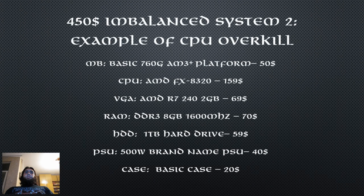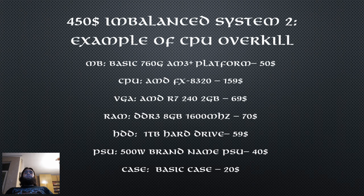This second example system is a bit more balanced but still not configured properly if your purpose is gaming. When dealing with a tight budget we have to find the perfect ratio between CPU and GPU power. In this machine the processing power is a bit overkill and the video card is way underpowered, making this an impractical system for gaming. The key to a good overall system is to achieve a good balance between all of the components and not to overpower one component at the expense of the others.